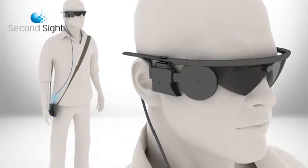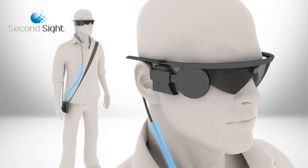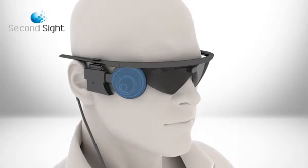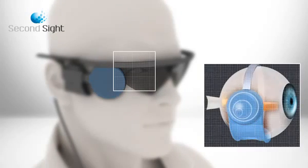The video is processed by a small portable unit and transformed into instructions which are sent back to the glasses. These instructions are then transmitted wirelessly to the implant on the eye.